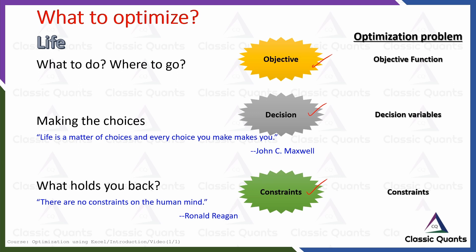In optimization problems, we call these objectives as objective functions, decisions as decision variables, and constraints are also present. How they are defined and how to deal with these things — all of this we will study in this course. This is just an introduction, making a direct analogy with a very generic approach by taking life as an example.